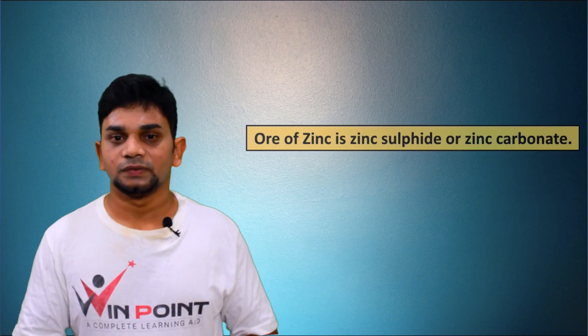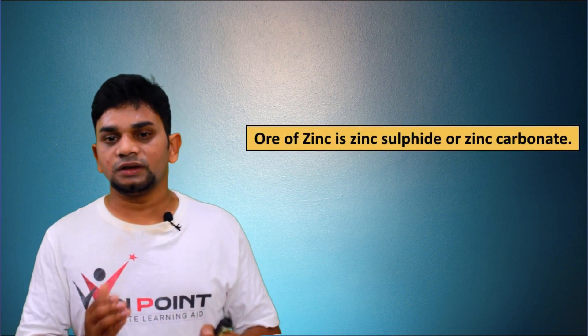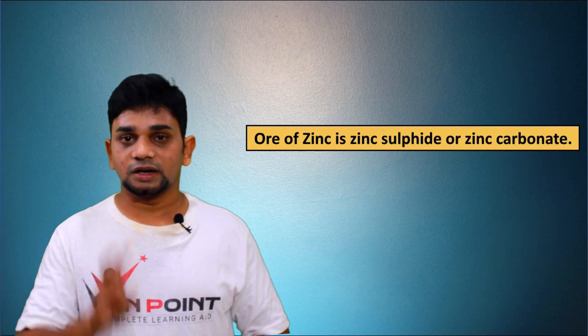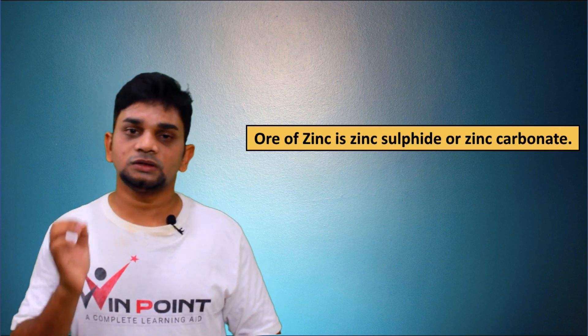For the extraction of zinc, there are two ores: one is zinc sulfide and the second one is zinc carbonate. An ore is the mineral from which metals can be easily and profitably extracted. For zinc, the two ores are zinc sulfide and zinc carbonate, and we are going to discuss the extraction of metal from these two ores.